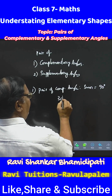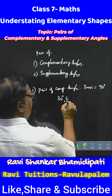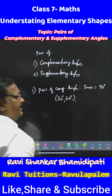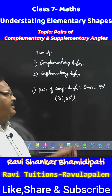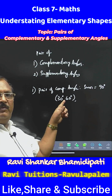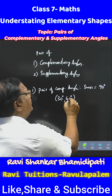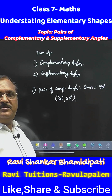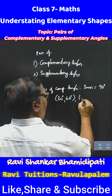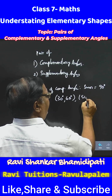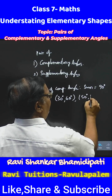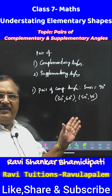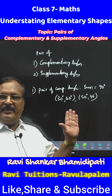For example, 30 degrees and 60 degrees are complementary angles — a pair of complementary angles — because these two angles sum is equal to 90 degrees. And 50 degrees and 40 degrees is also a pair of complementary angles.